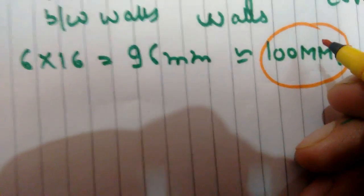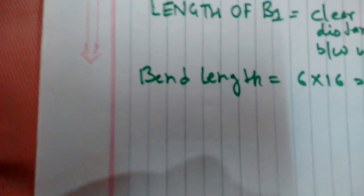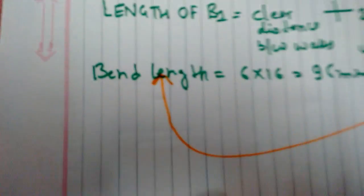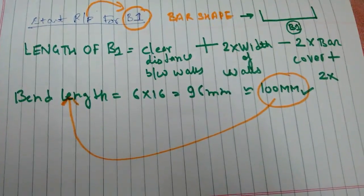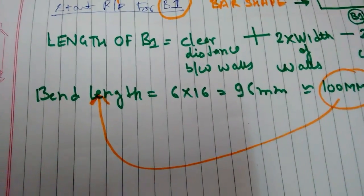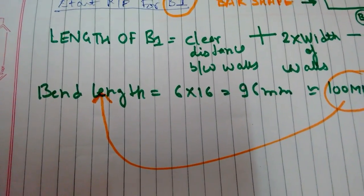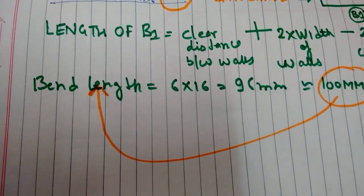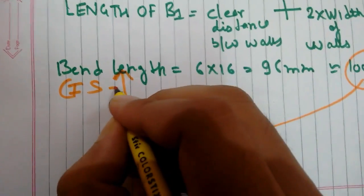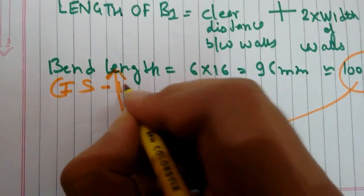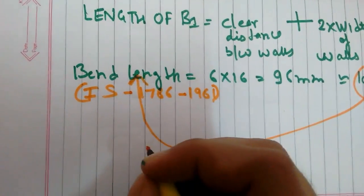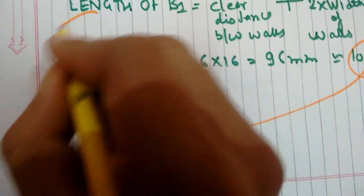For reinforcement conforming to IS code 1786-1961, this is 100. So length, if we calculate now, will be equivalent to that: the clear distance between walls is 4000.